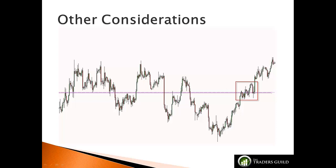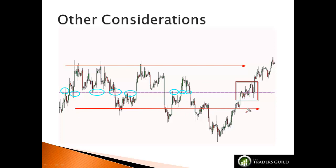This is an example of a washed-out SR. You can see resistance, support, support, support, support, resistance — all not respecting price cleanly, all in very quick succession. It's basically sideways oscillating action around this level. It will come to a point where it loses its ability to cause price to react. You can see within this zone the bounces are not clear and concise like the early bounces — price is no longer respecting it in a meaningful way, just drifting through it.